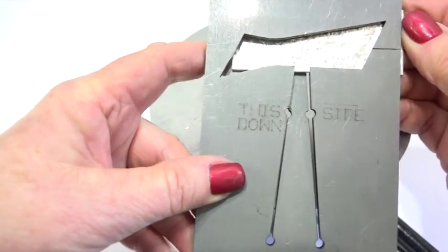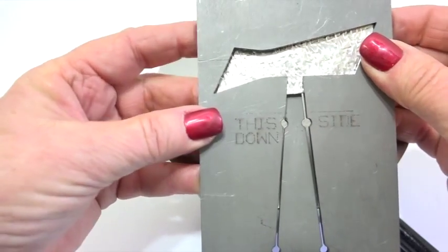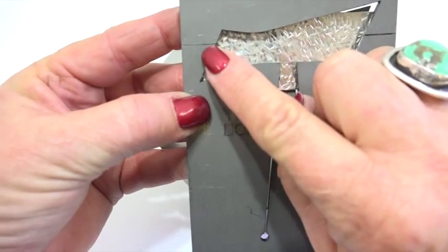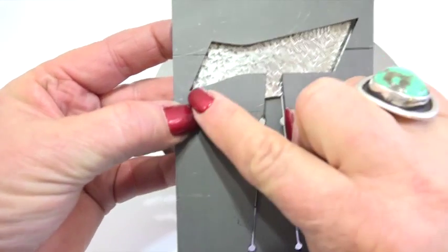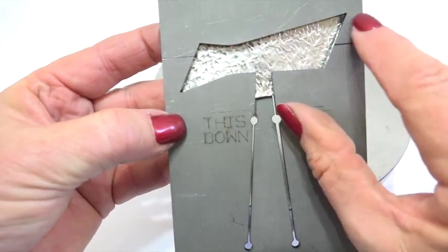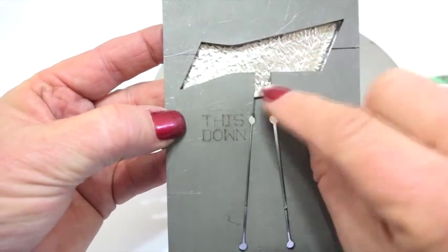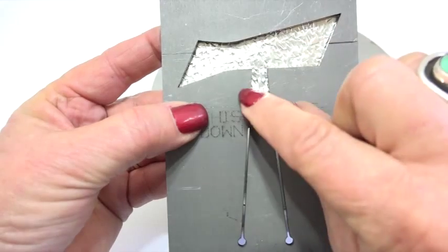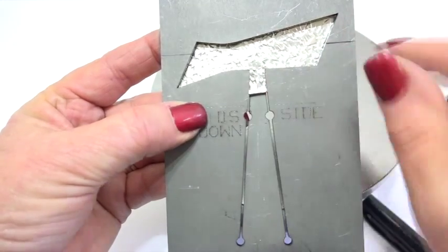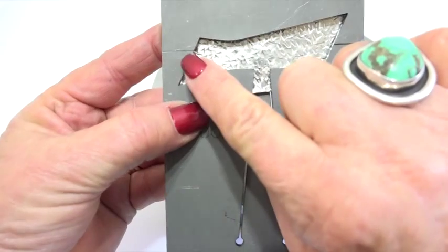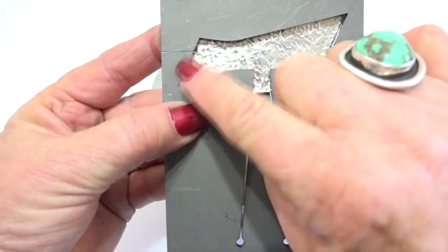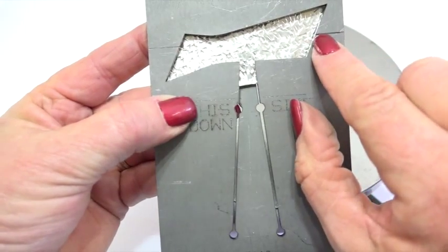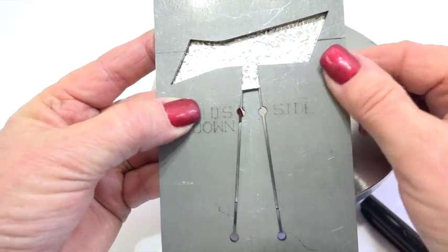So this particular ring is about a size nine and a half from the center to the center. You don't want to measure from corner to corner because this ring actually overlaps and I'll show you that. But if you want it longer I'll show you how to do that as well. So again from the center point in the middle of the pancake die to here it's about a size nine and a half.